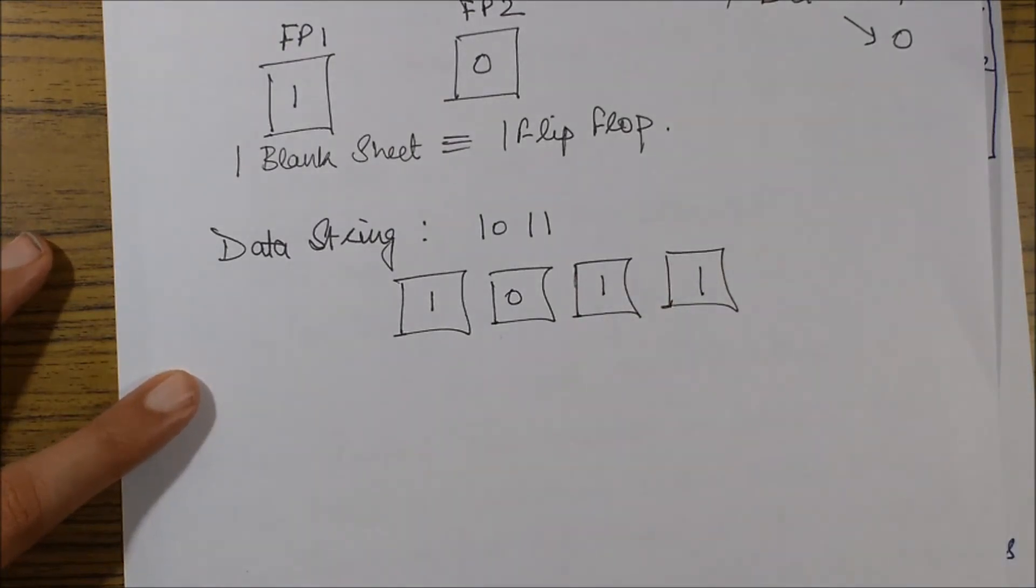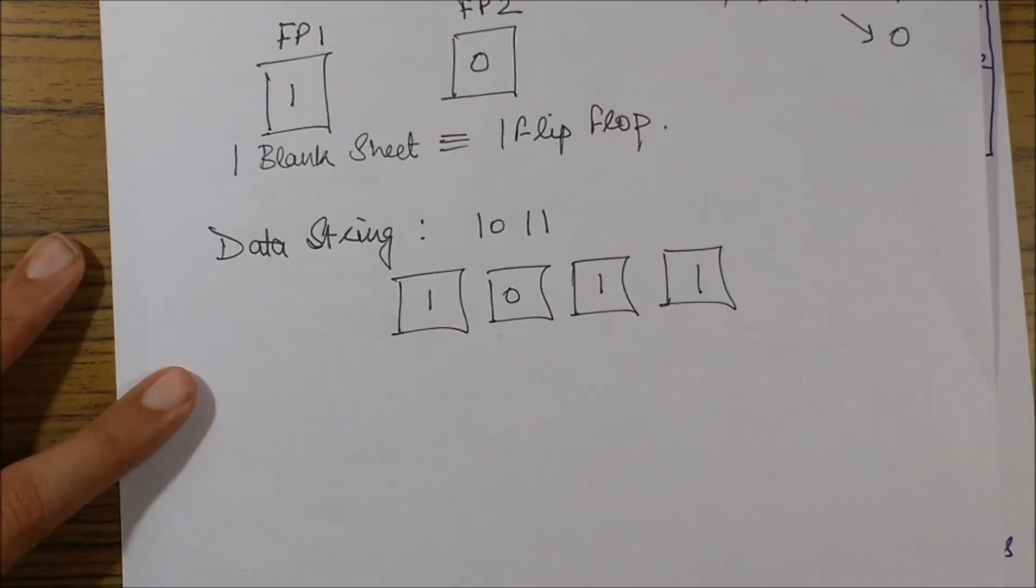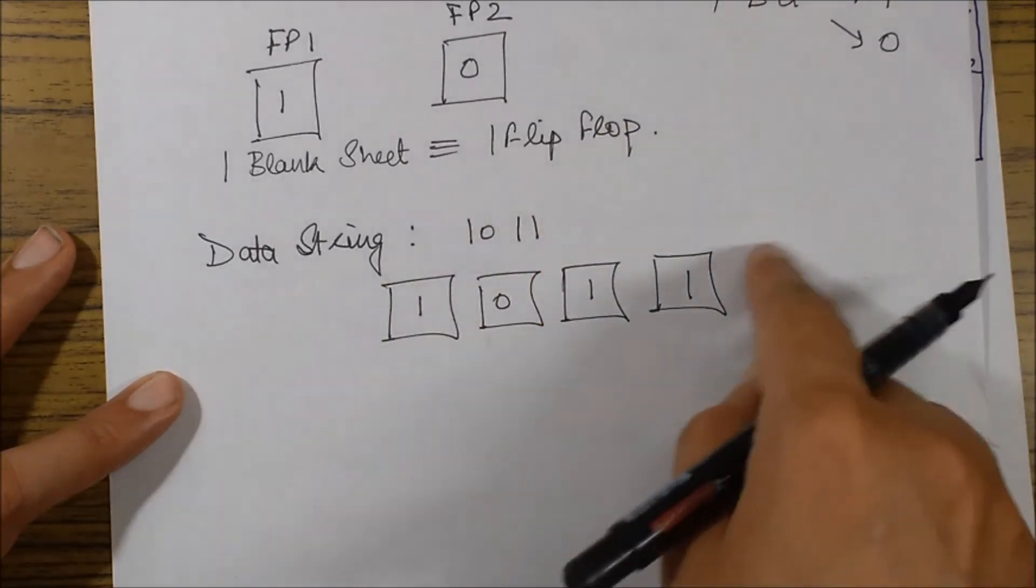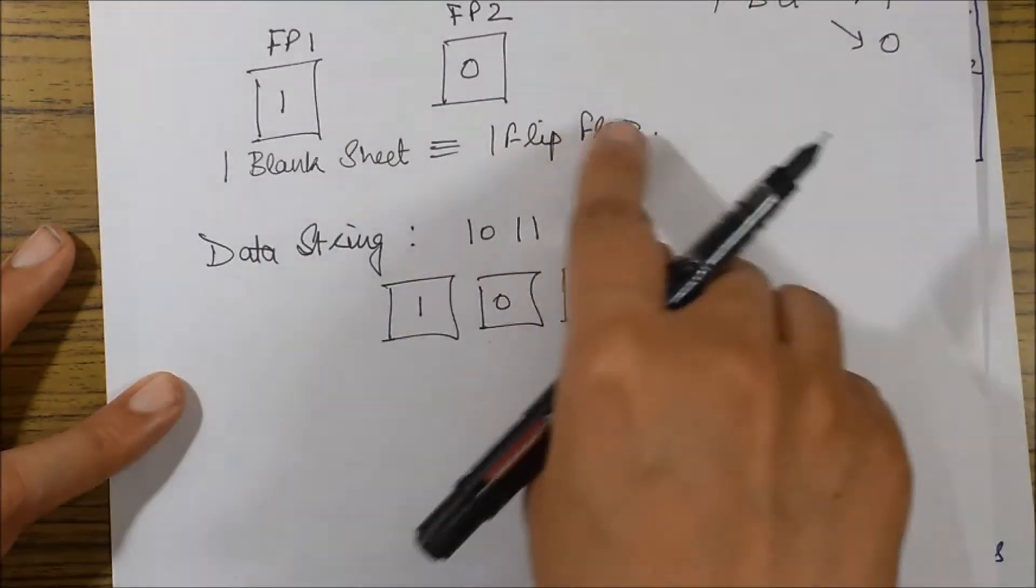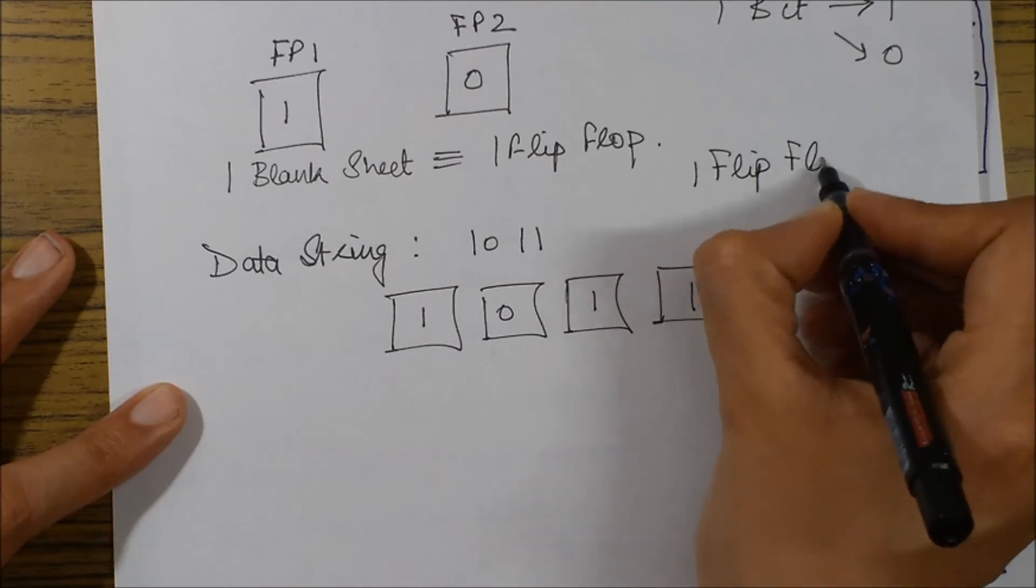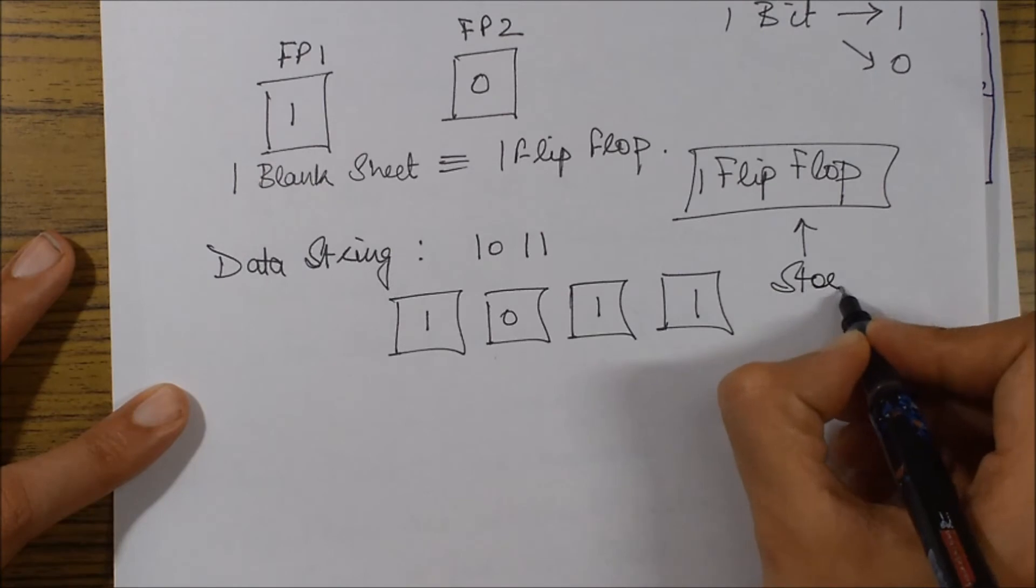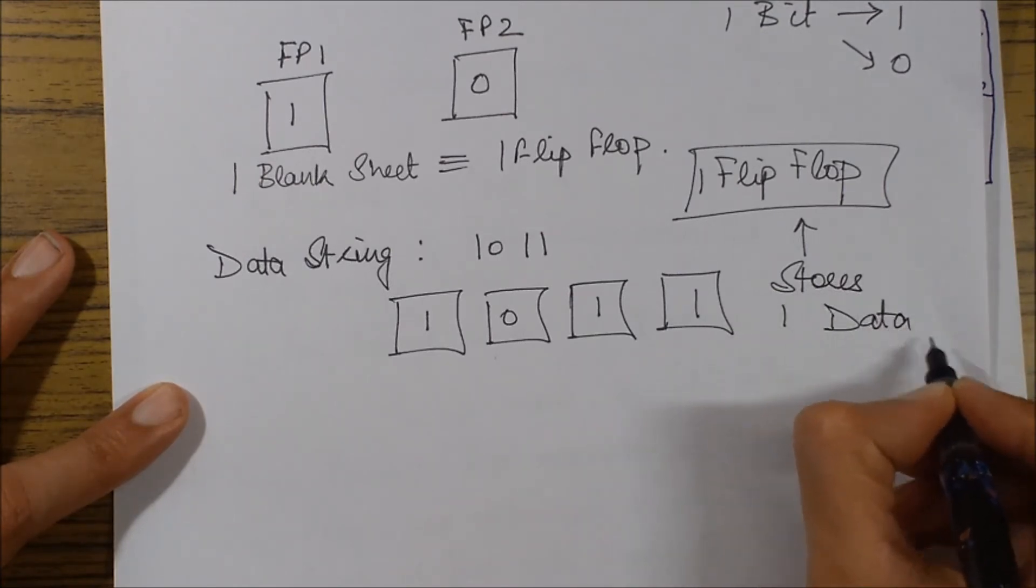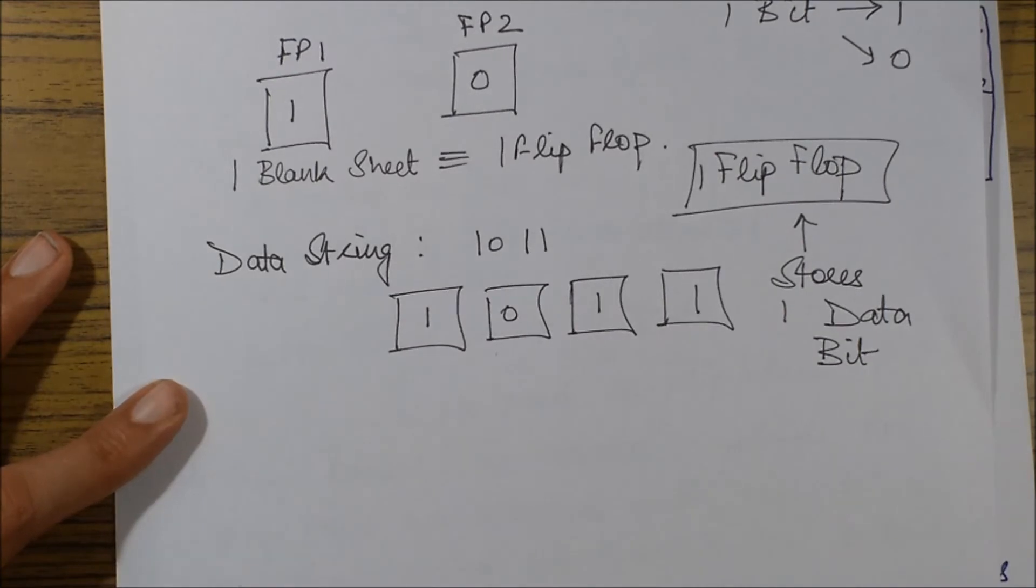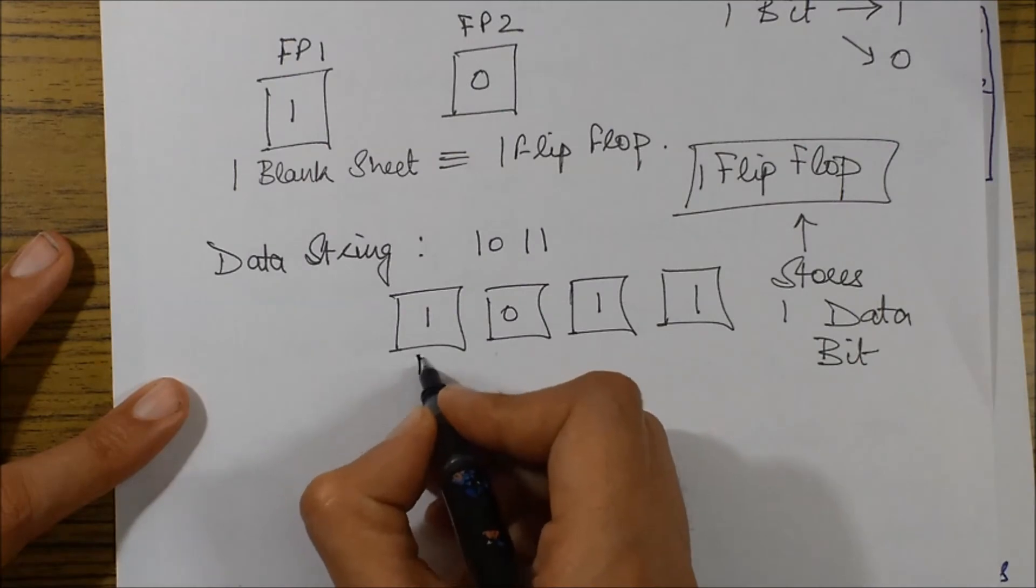Similarly, the same thing happens in the memory. If I want to store the same data, I'll be storing the same data bits in the form of flip-flops which will be arranged in a certain manner. One flip-flop basically corresponds to one page which stores one data bit. To store these multiple data bits, we will take multiple flip-flops.